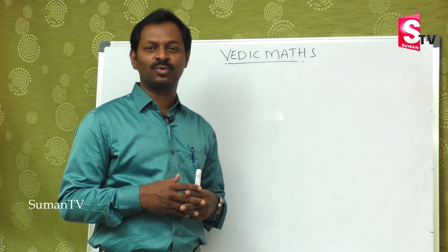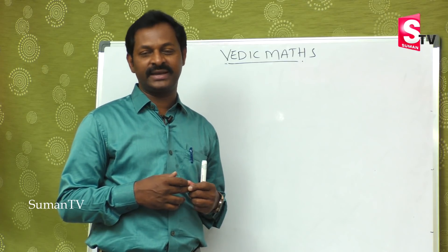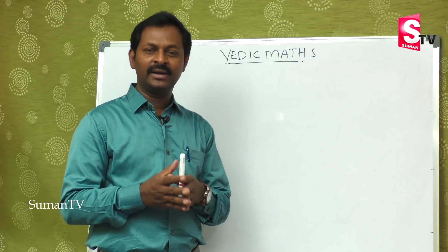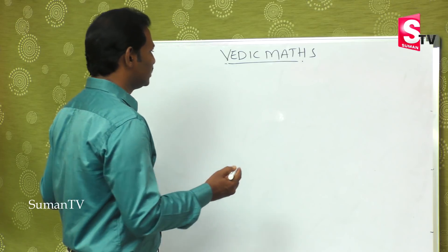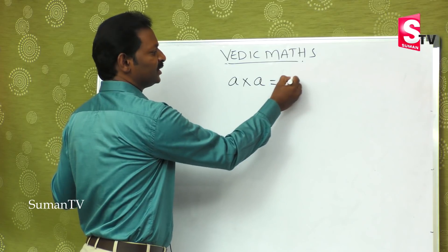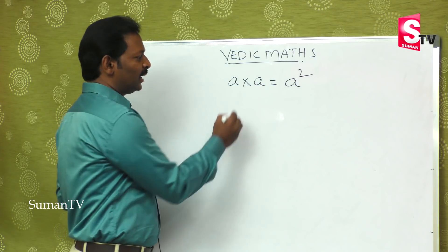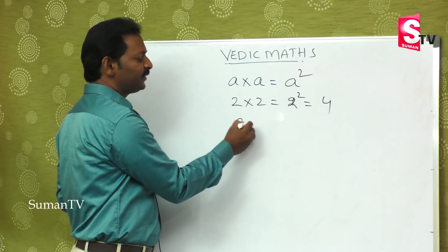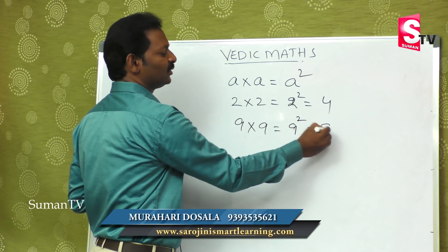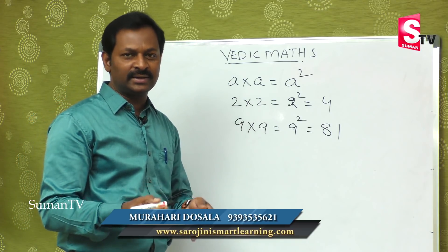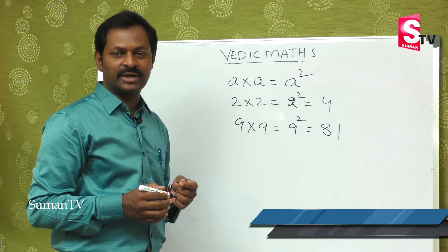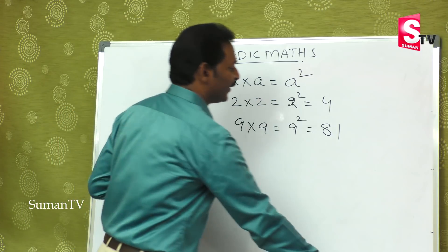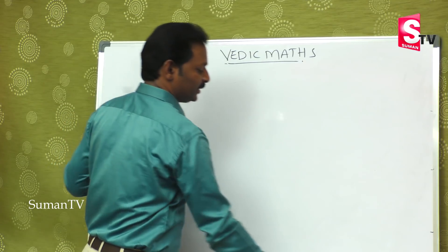The multiplication done in regular school method and the Vedic math multiplication are somewhat different. Today we look at squares. A square means multiplying a number by itself. Suppose 'a' multiplied by 'a' is a-square. So two into two is two-square, equal to four. Nine into nine is nine-square, equal to eighty-one. Up to single digits everyone knows, but for 11, 12, 13, 14, 15, 16, 17 onwards it takes some time. In squares also we have some special number sets.